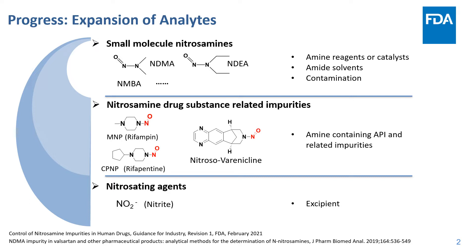For example, ranitidine, a drug for smoking cessation, is a secondary amine, and it can form a nitroso-ranitidine impurity. These relatively larger and more complex nitrosamines require a greatly expanded scope of current analytical methods.